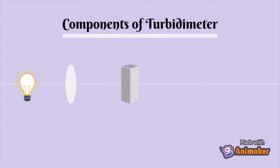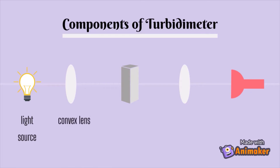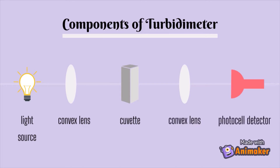Turbidimetry consists of a light source that emits wavelengths near the ultraviolet range, a convex lens to collect and direct a beam of light coming from the light source, a sample holder or cuvette, another convex lens to collect the transmitted beam of light, and finally a photocell detector or a photo tube, and a read-out meter to measure the amount of transmitted light.